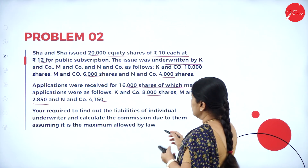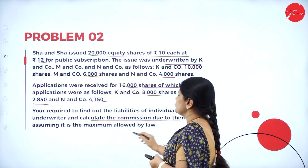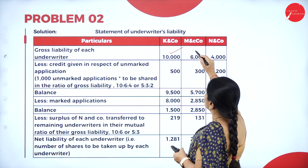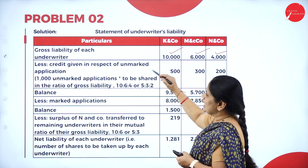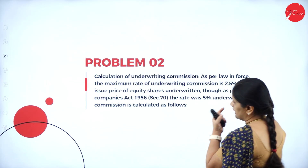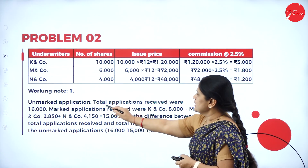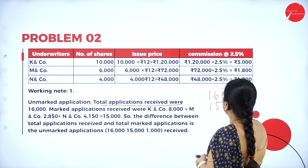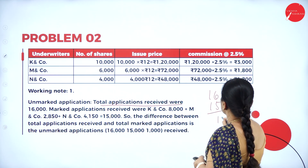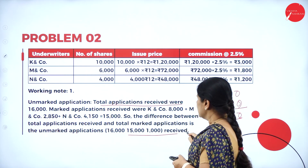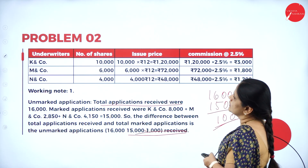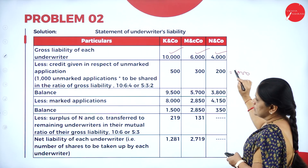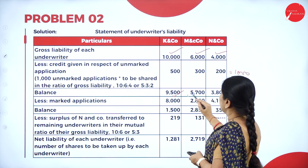We are required to find out the liabilities of individual underwriters and calculate the commission due to them, assuming it is the maximum allowed by law. The gross liability is 10,000, 6,000, 4,000. To calculate the unmarked application: total applications received were 16,000, marked applications are 15,000, so the balance of 1,000 becomes the unmarked application. This 1,000 is divided as 500, 300 and 200, giving balances of 9,500, 5,700 and 3,800.